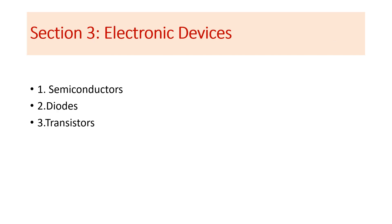Section three is mainly based on Electronic Devices — it covers the basics of electronics like Semiconductors, Diodes, and Transistors. We will get questions based on these three concepts, including types of semiconductors, problems on semiconductors, diodes, and transistors.